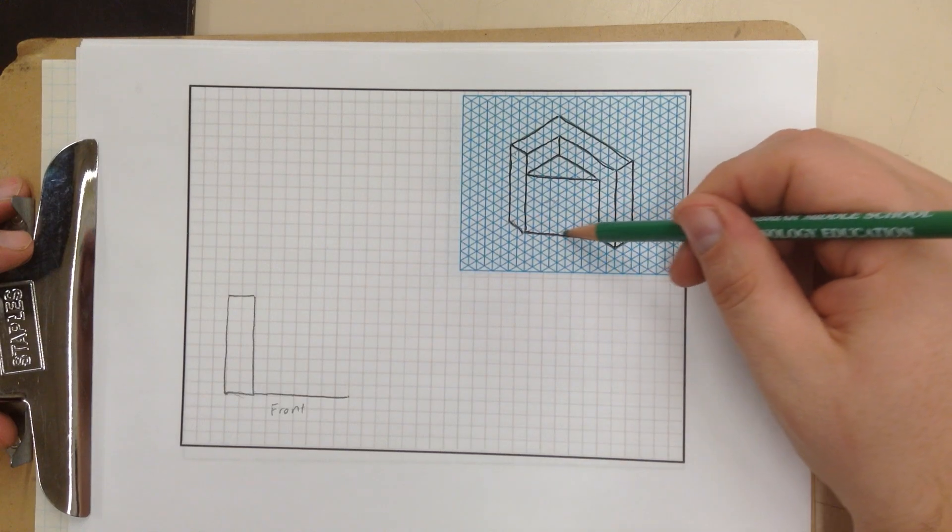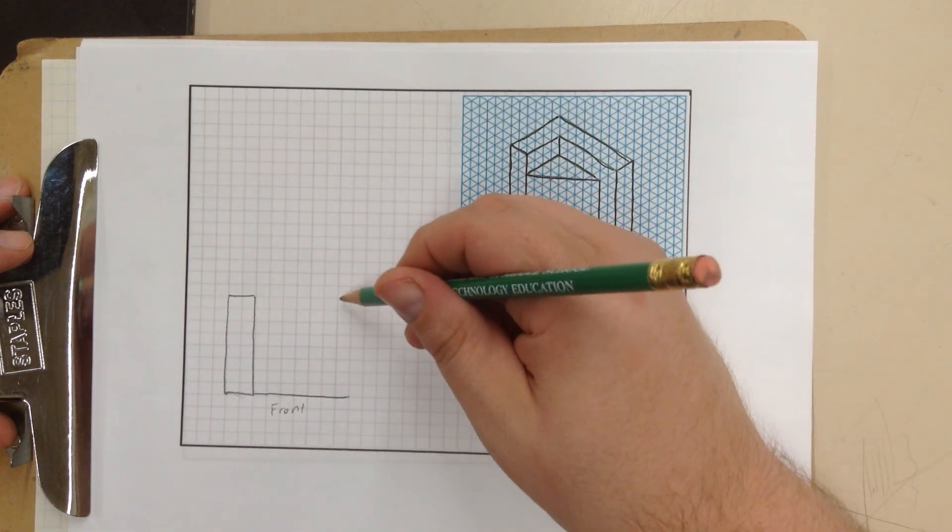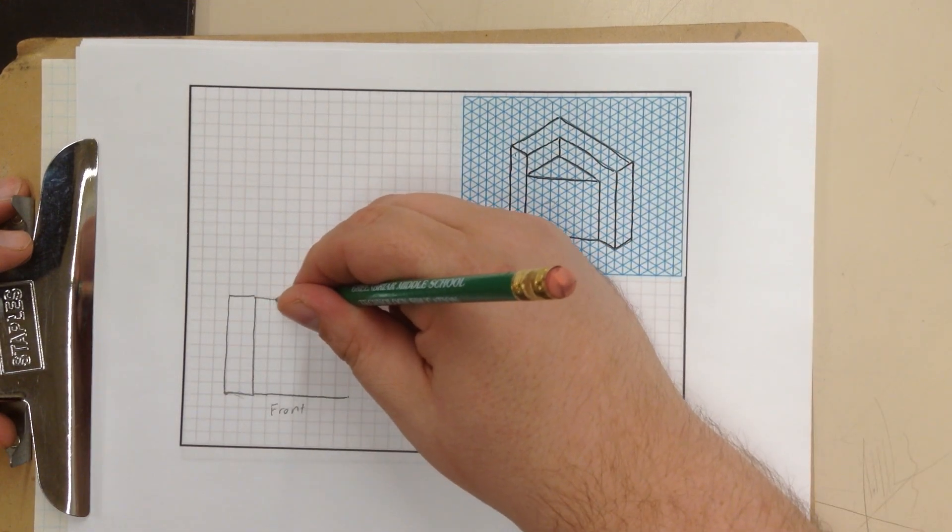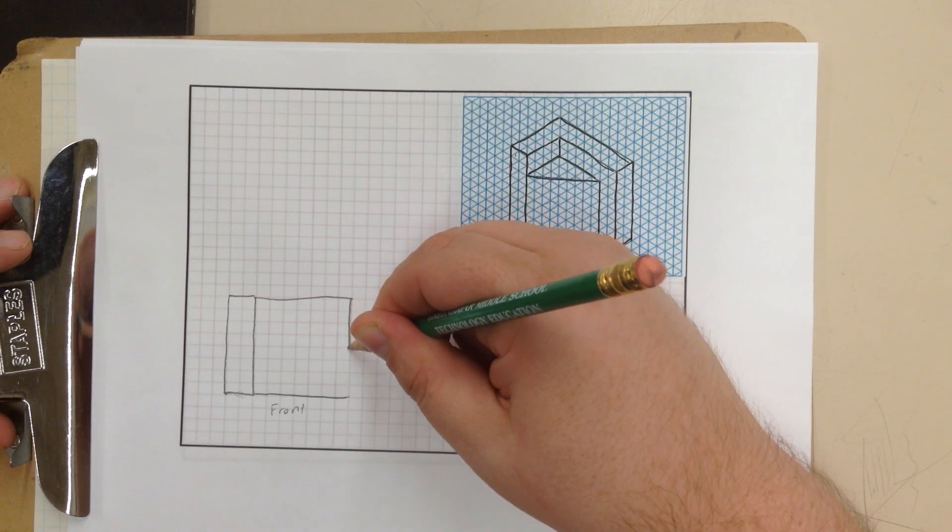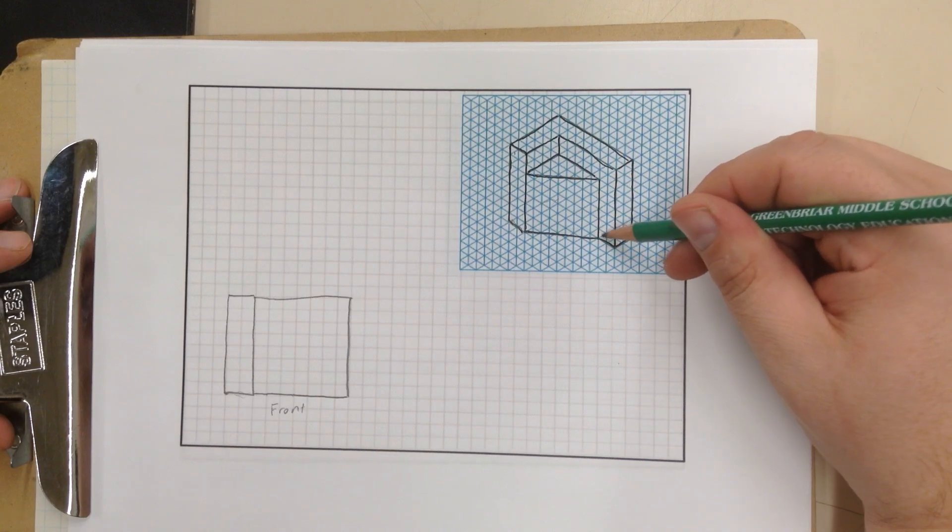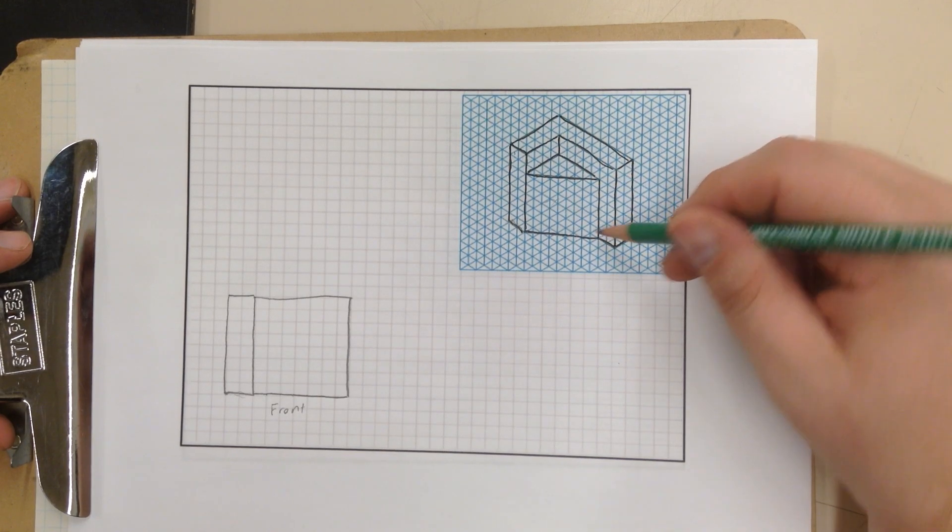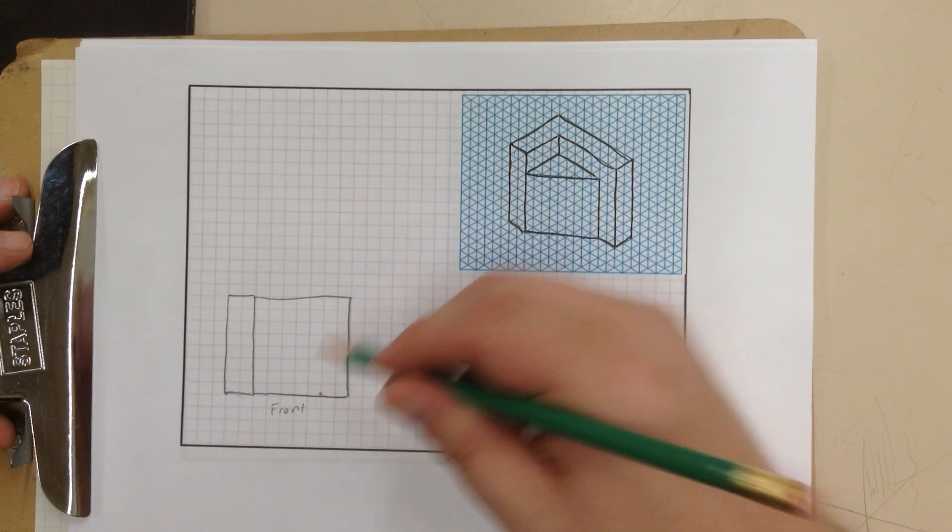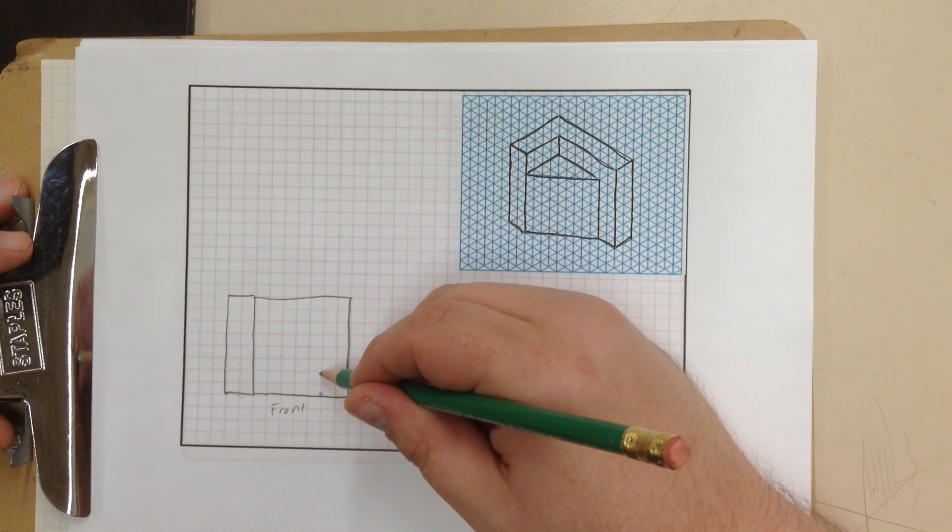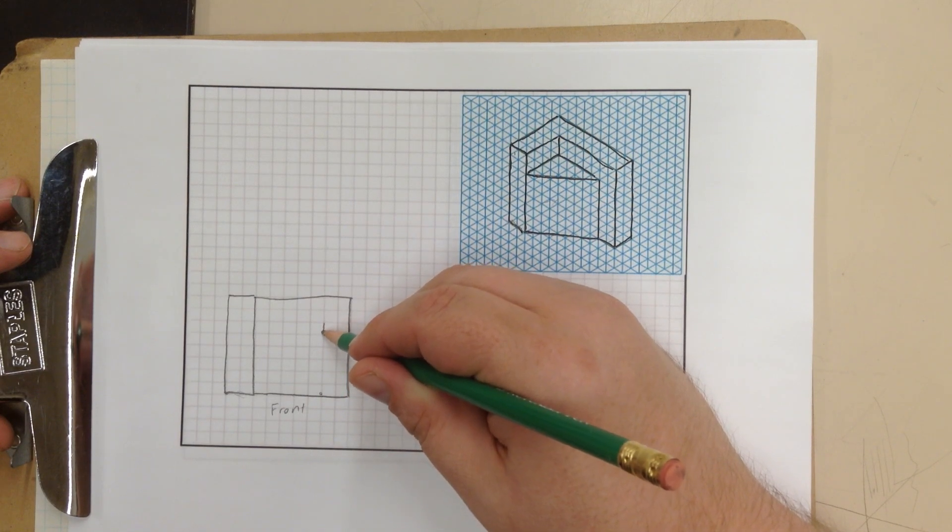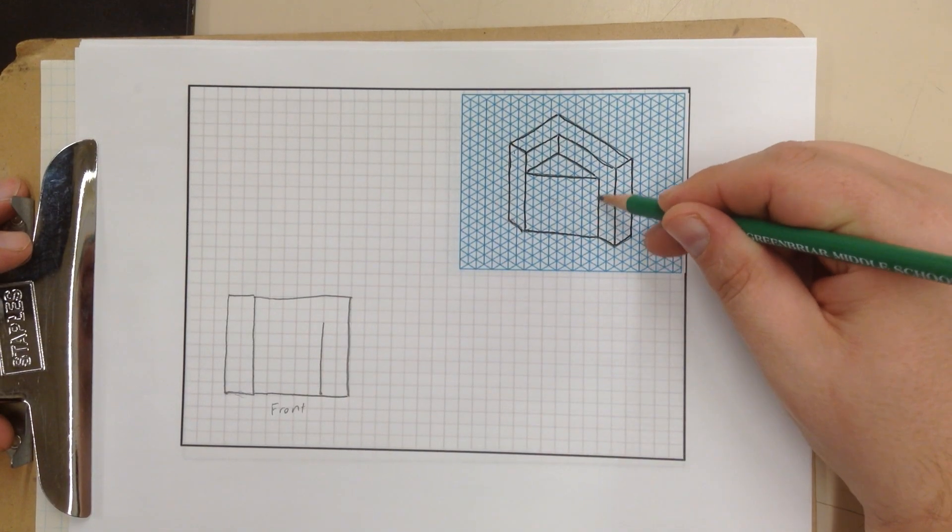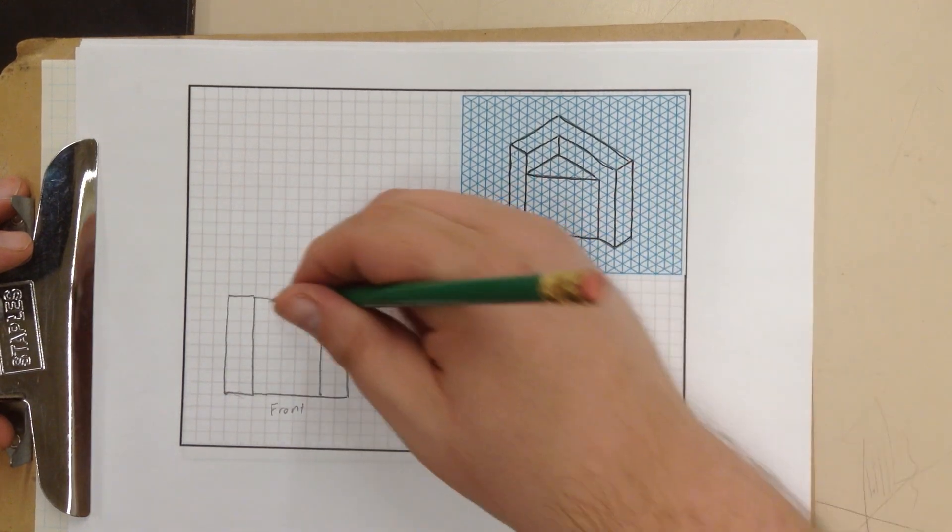That's my bottom edge, which is this right here. And since it's rectangular, I'm going to close in the shape. If you notice this right here, this is a flat place that's 2 squares in. So I'm going to mark it. It is 1, 2, 3, 4, 5, 6 up. 1, 2, 3, 4, 5, 6 up. Okay. So I just drew this right here.